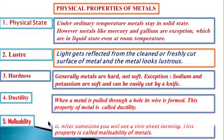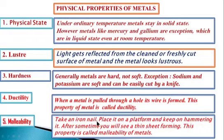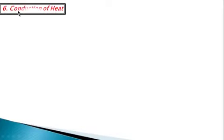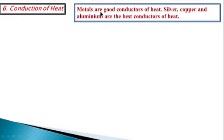Fifth, malleability — take an iron nail, place it on a platform, and keep on hammering it. After some time you will see a thin sheet forming. This property is called malleability of a metal. Sixth, conduction of heat — metals are good conductors of heat. Silver, copper, and aluminium are the best conductors of heat.